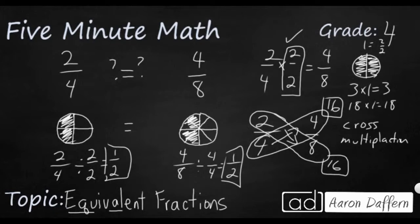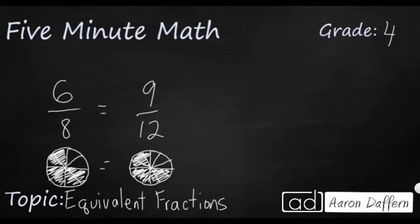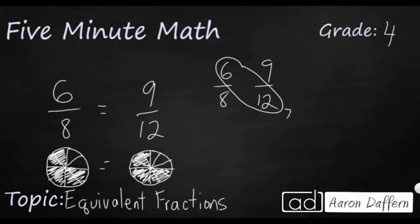Now it's time for you to try. Take a moment and determine whether six-eighths is equal to nine-twelfths, using any of the methods we've discussed. Pause the video, work it out, and when you finish, unpause and check your work. I drew six-eighths and nine-twelfths — I think they're the same, but drawing twelfths is kind of tough. So let me use cross-multiplication: six times twelve is seventy-two, and eight times nine is also seventy-two. That's a check — those are equivalent.